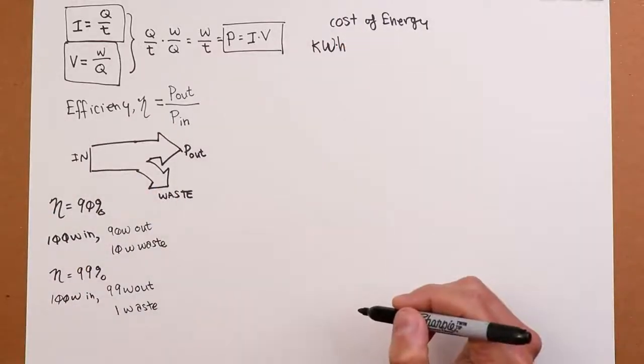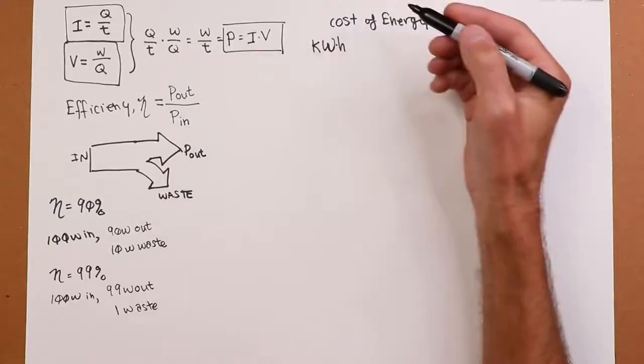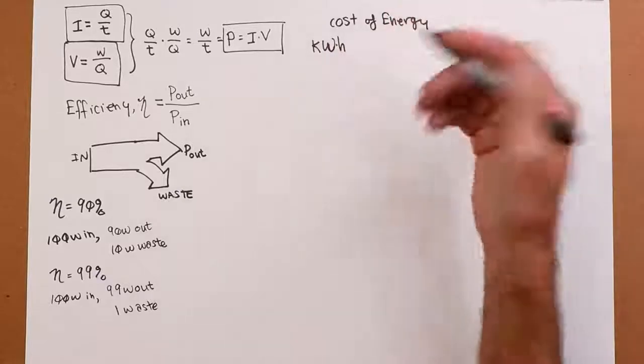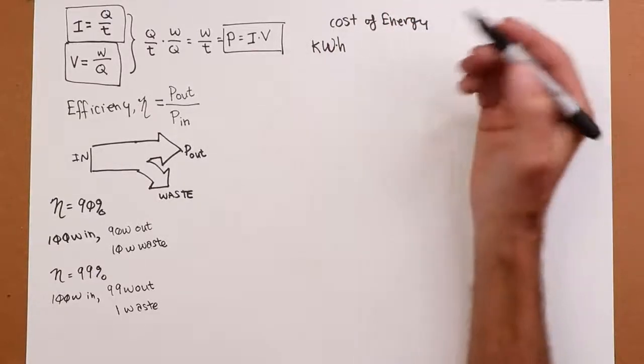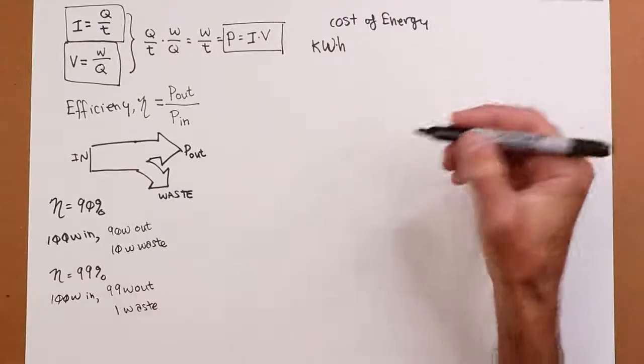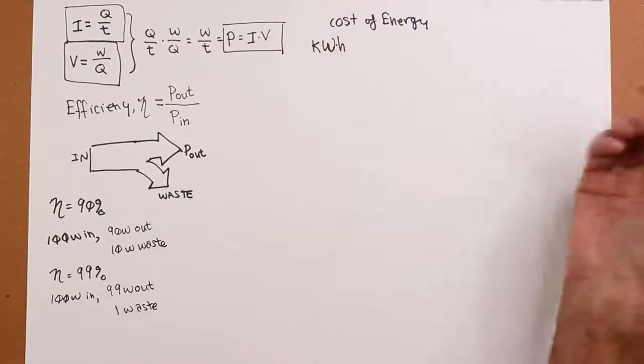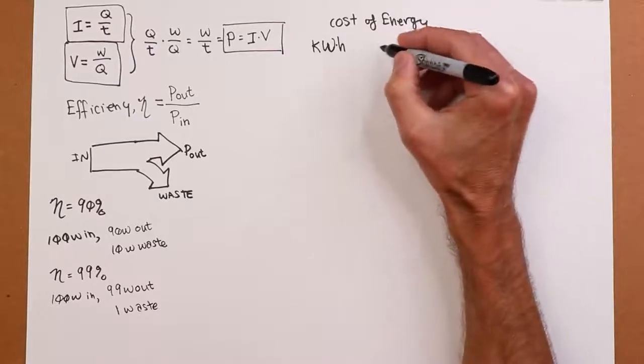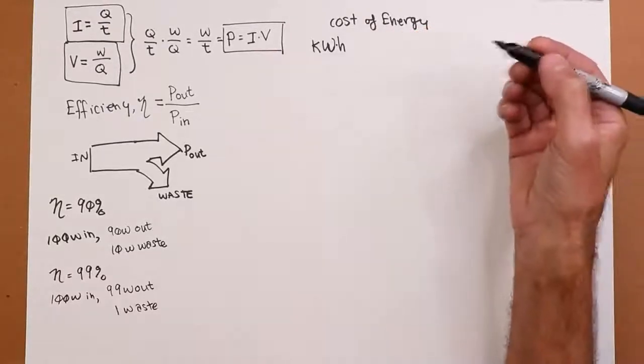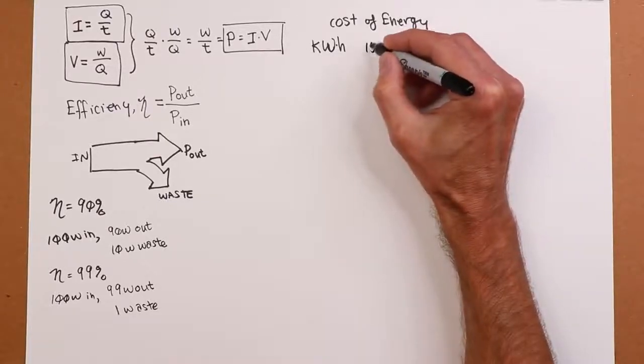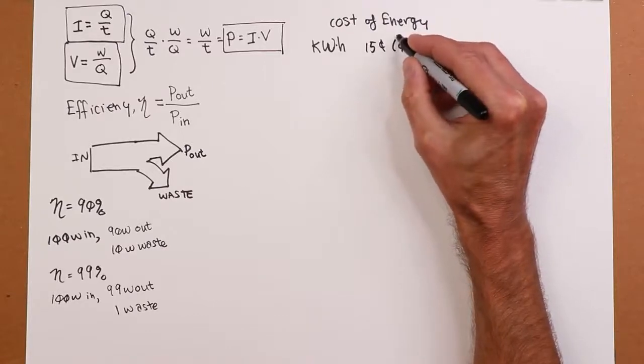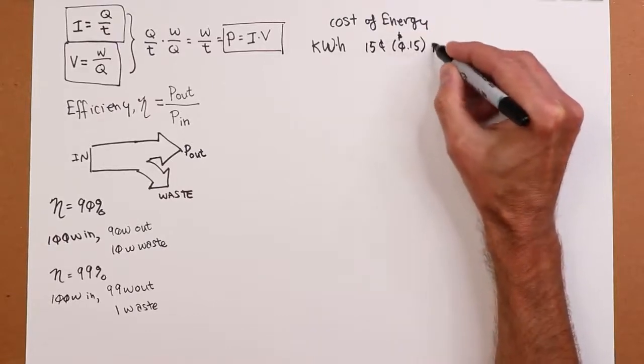That's what they're going to charge you. They don't care how fast you use it. That's just the total amount of energy that is delivered to your home or your business. Typical rate depends on where you live, local rates and so forth. But as a ballparky kind of number, for our calculations, let's just say it costs 15 cents per kilowatt hour. 15 cents or 0.15 dollars per kilowatt hour.